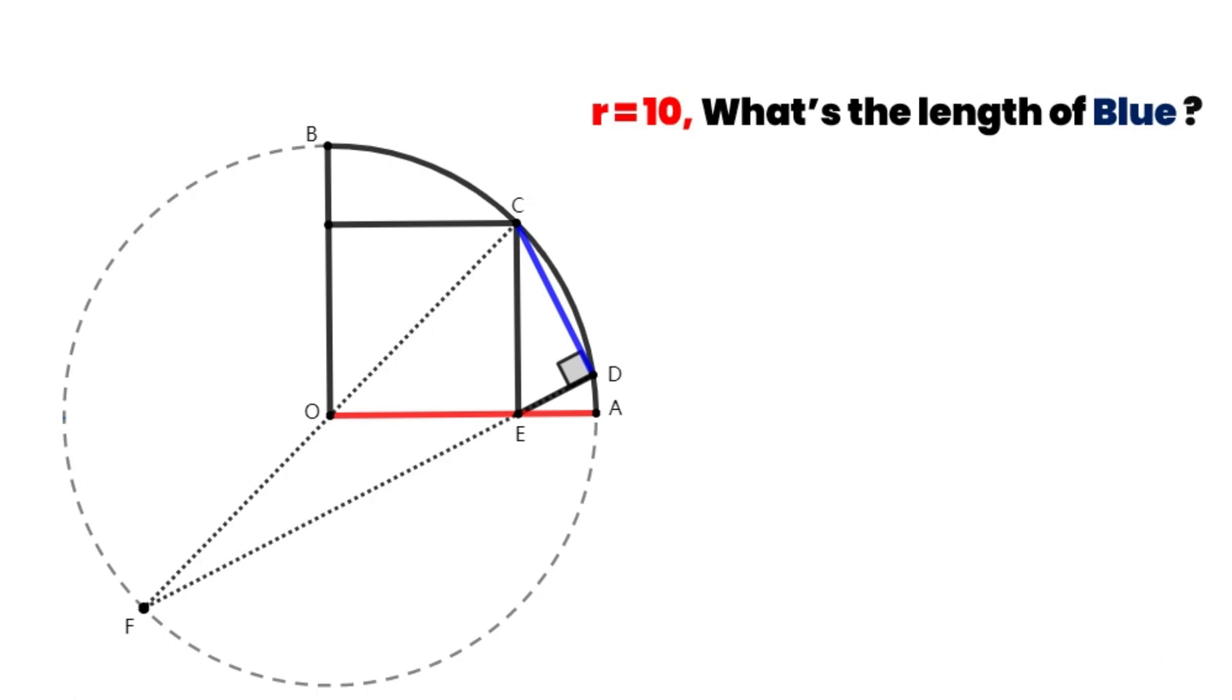We say angle OEF is alpha. Angle CFD is beta. And angle COE is equal to 45 degrees. So we can get alpha plus beta is equal to 45 degrees.